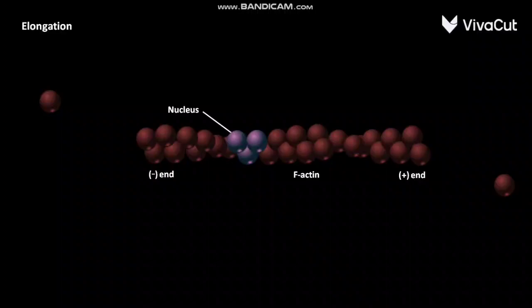As F-actin filament grows, the concentration of G-actin monomers decreases. This decrease in concentration of G-actin monomers stops when equilibrium is reached between filament and monomers.